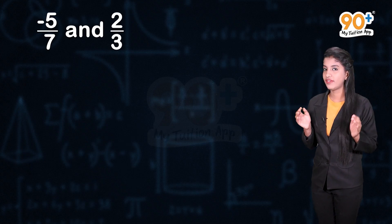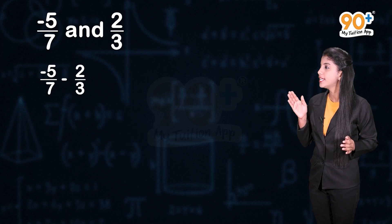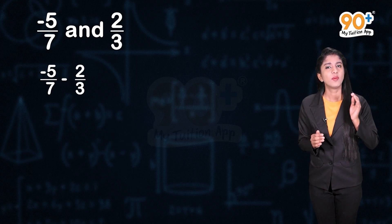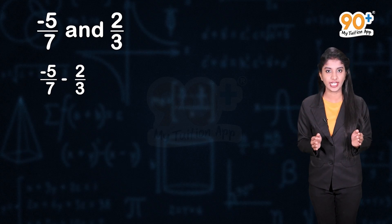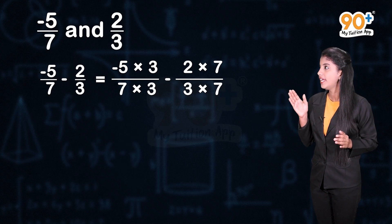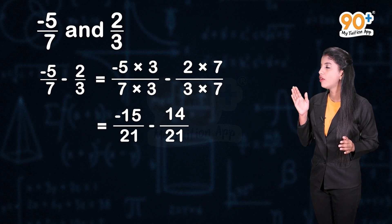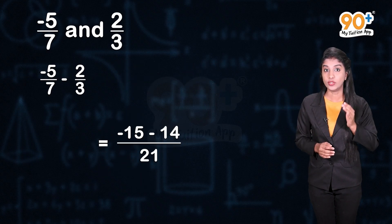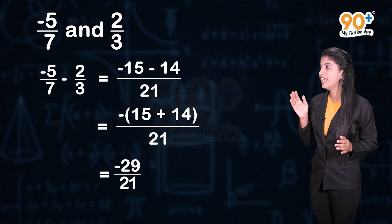Now let us take minus 5 divided by 7 and 2 divided by 3. What is minus 5 divided by 7 minus 2 divided by 3? Here also, to solve this, we need to make the denominator the same. So multiply both numerator and denominator by 3 in minus 5 divided by 7, and by 7 in 2 divided by 3. We get minus 15 divided by 21 minus 14 divided by 21, which equals minus 15 minus 14 divided by 21, giving us minus 29 divided by 21.